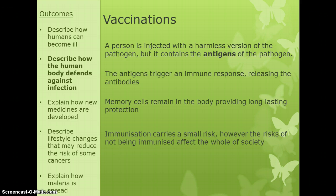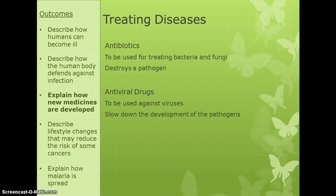Immunisation is a touchy topic — some people are very against it, some very much for it. Reasons against include the small risk that immunisation can cause the illness you're trying to prevent, and there can be side effects. However, autism is not one of them — there is absolutely no link between the MMR vaccine and autism. The risks of people not being immunised are quite large and affect the whole of society. For immunisation to be effective, we need 80 to 90% of the population to be immunised, giving what we call herd immunity — meaning there aren't enough susceptible people for the illness to spread.